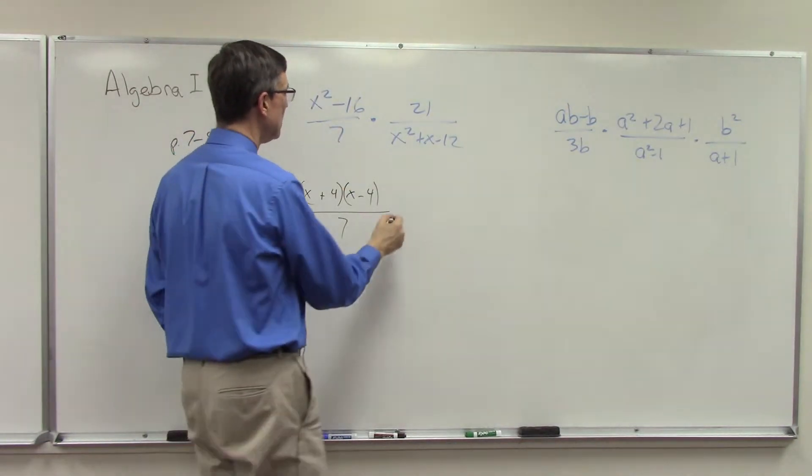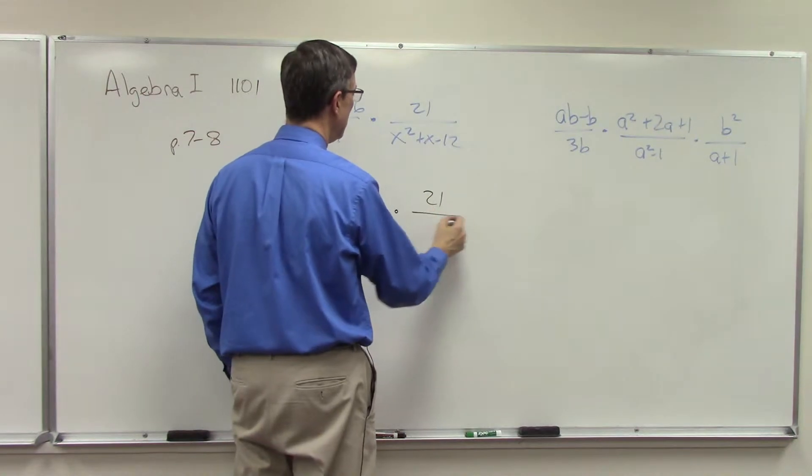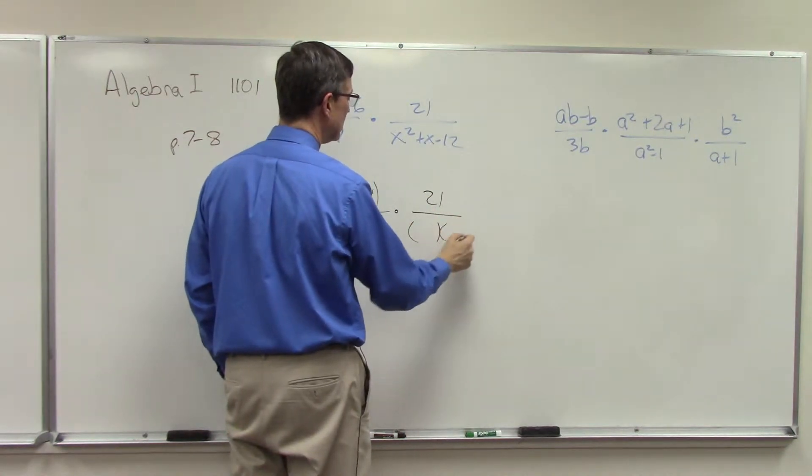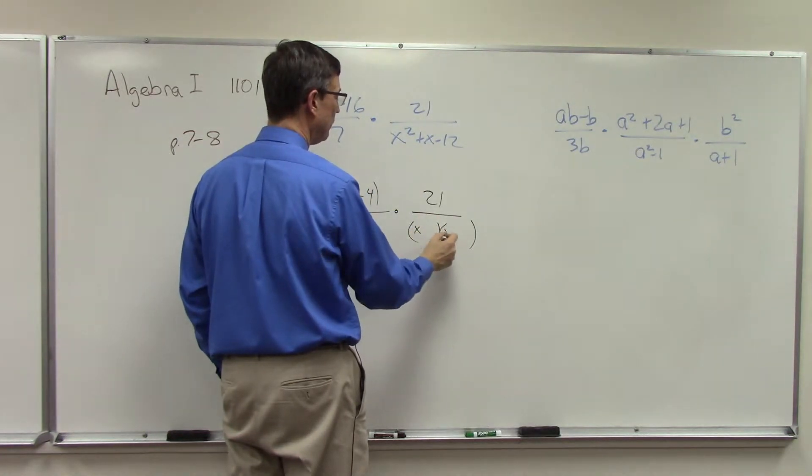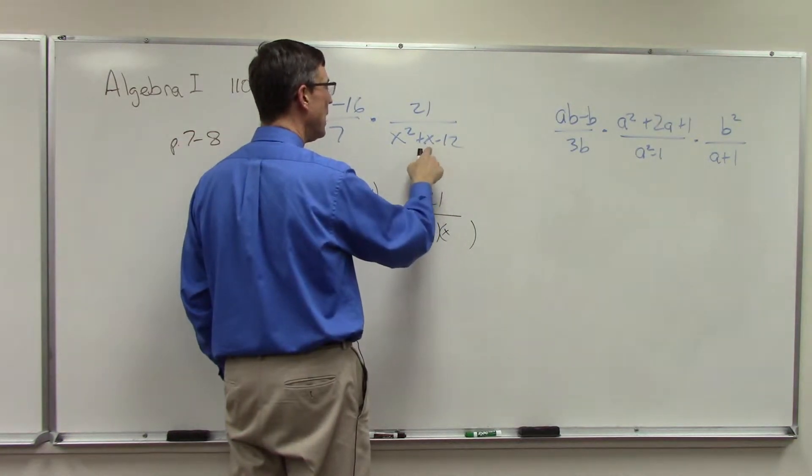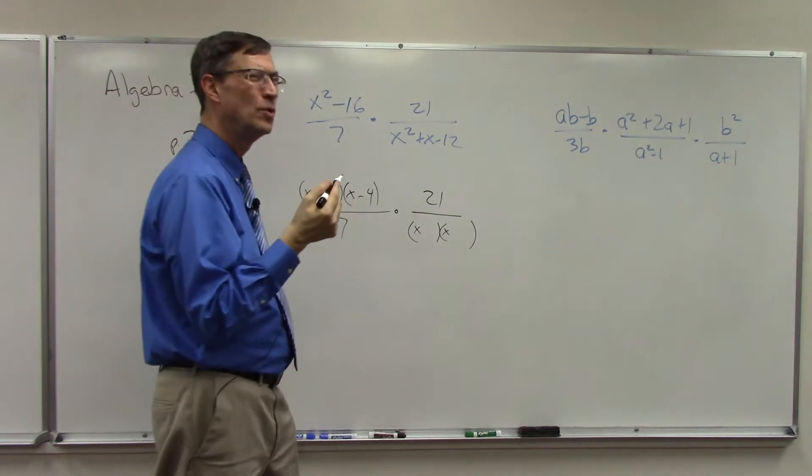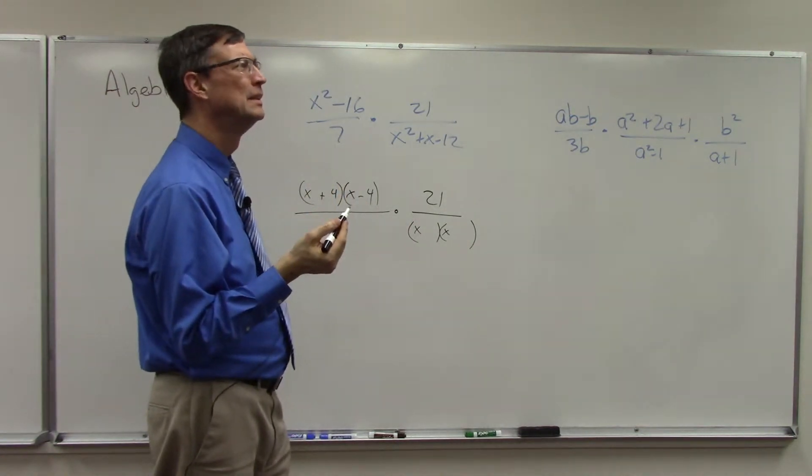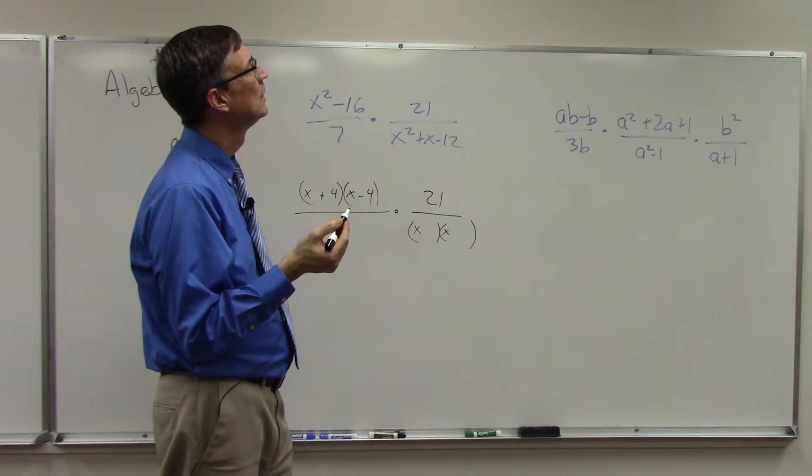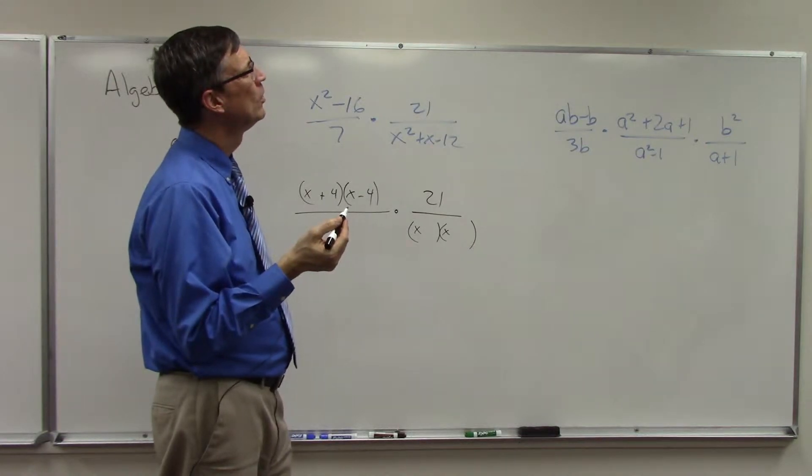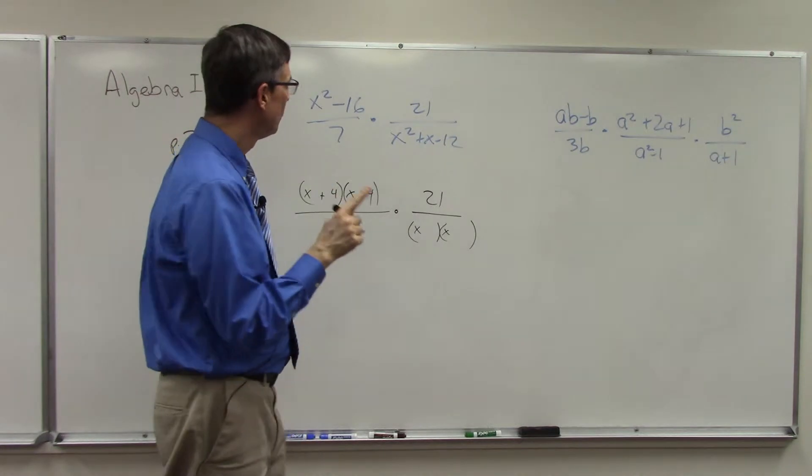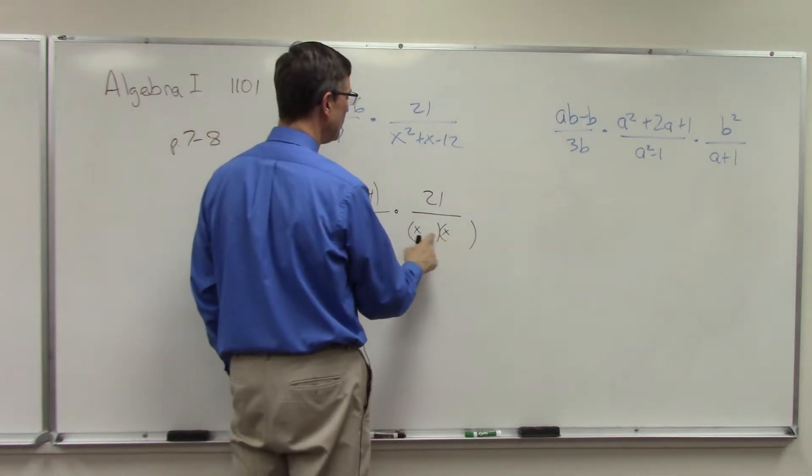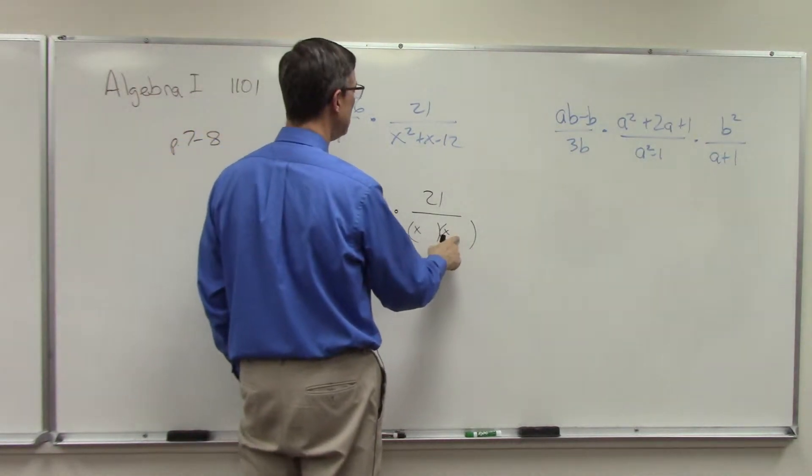So that one's easy. Times 21, and now we're going to factor this into two quantities. All right, so I want to end up with one in the middle. So if I do 2 and 6, I can't get one out of that. 1 and 12, nope. 3 and 4. So try 3 and 4, and then figure out which one needs to be positive which one needs to be negative.